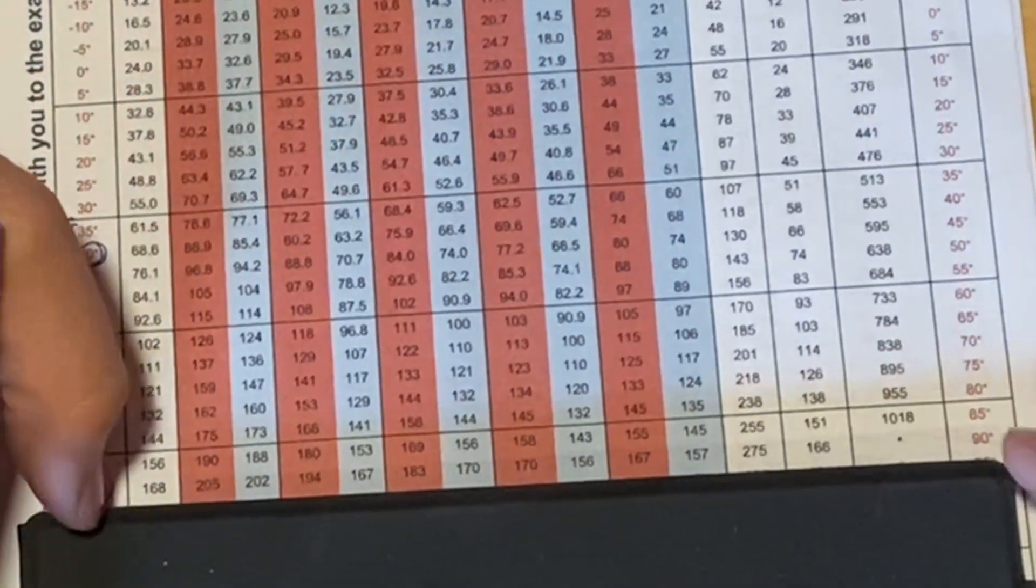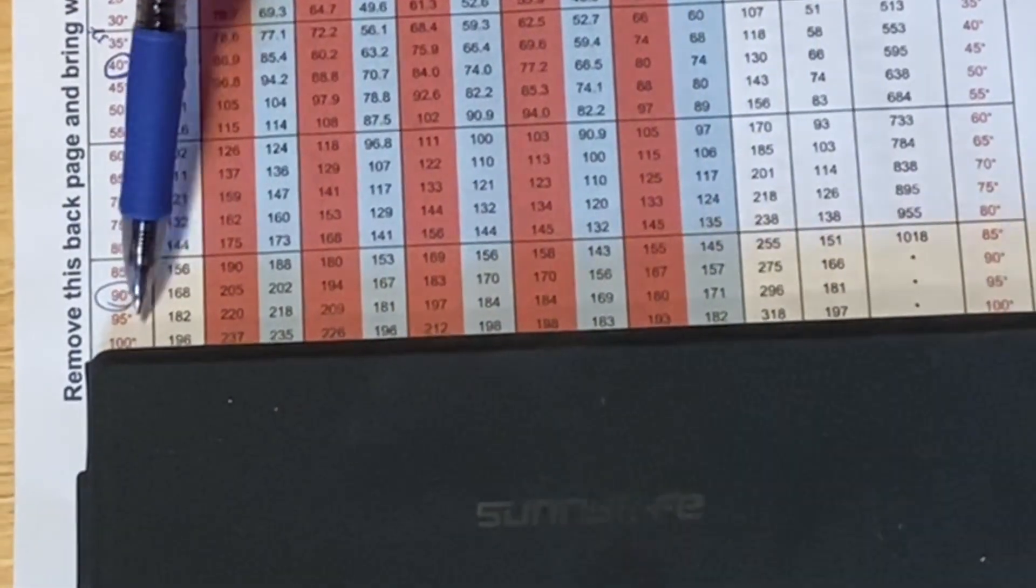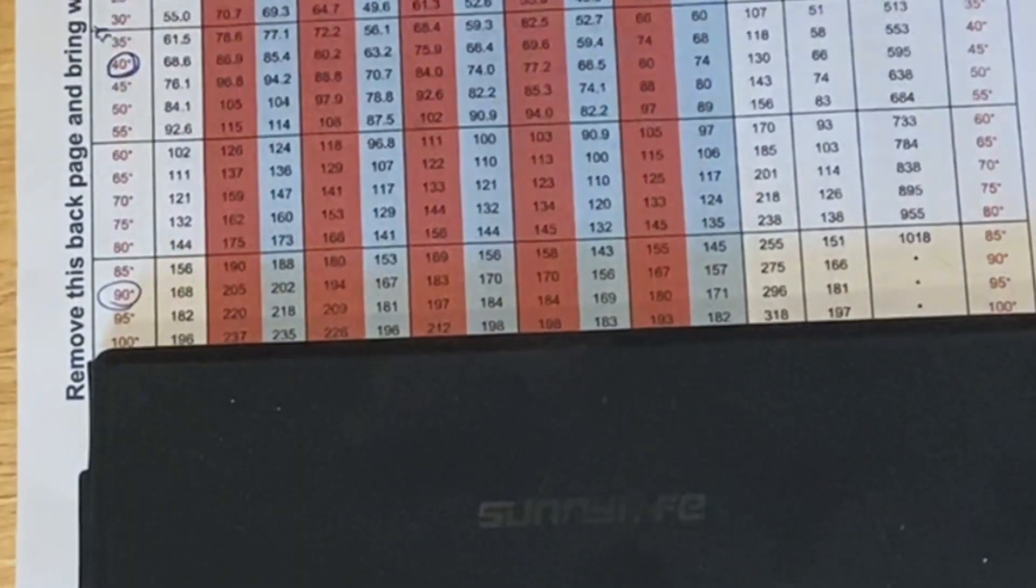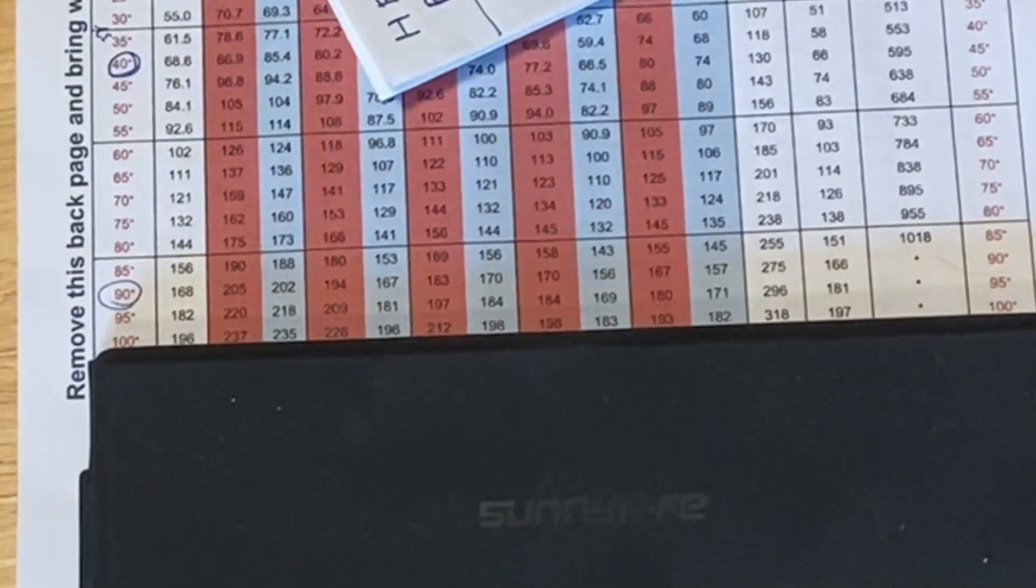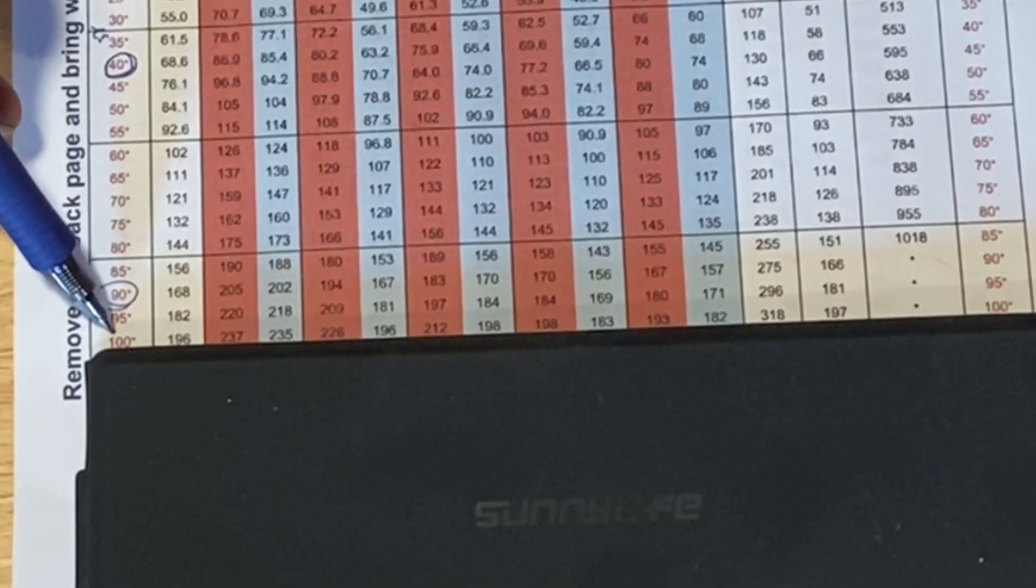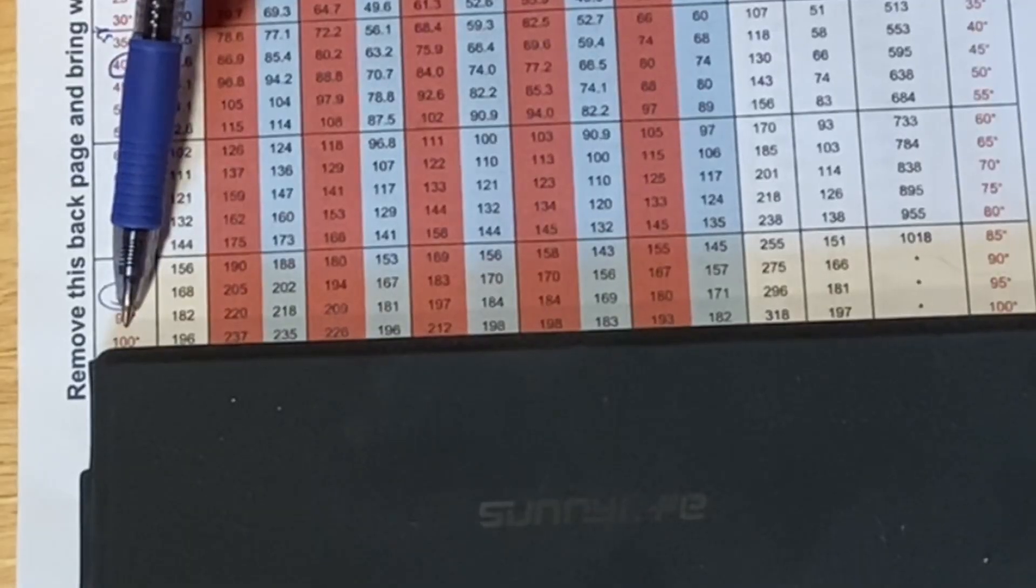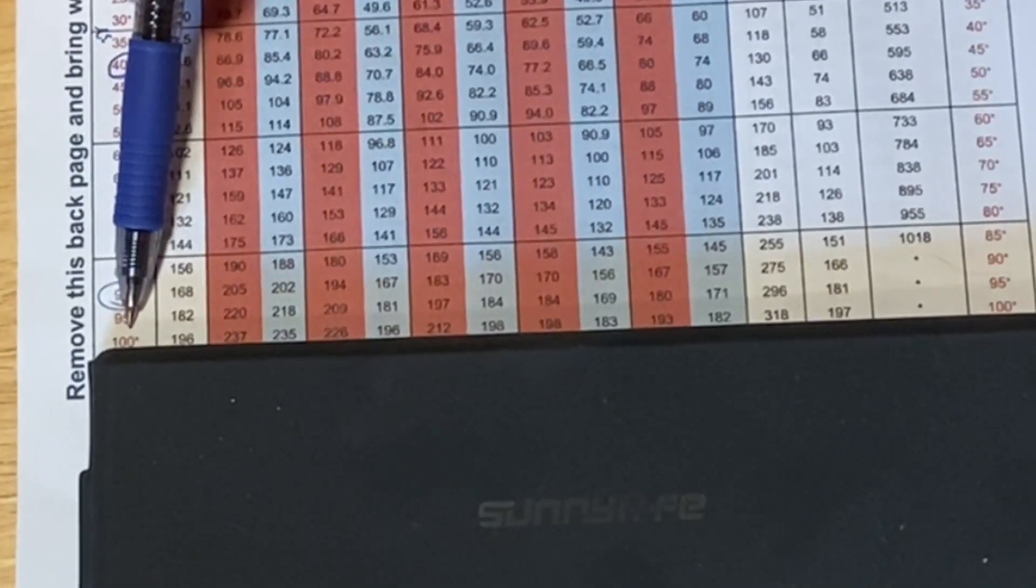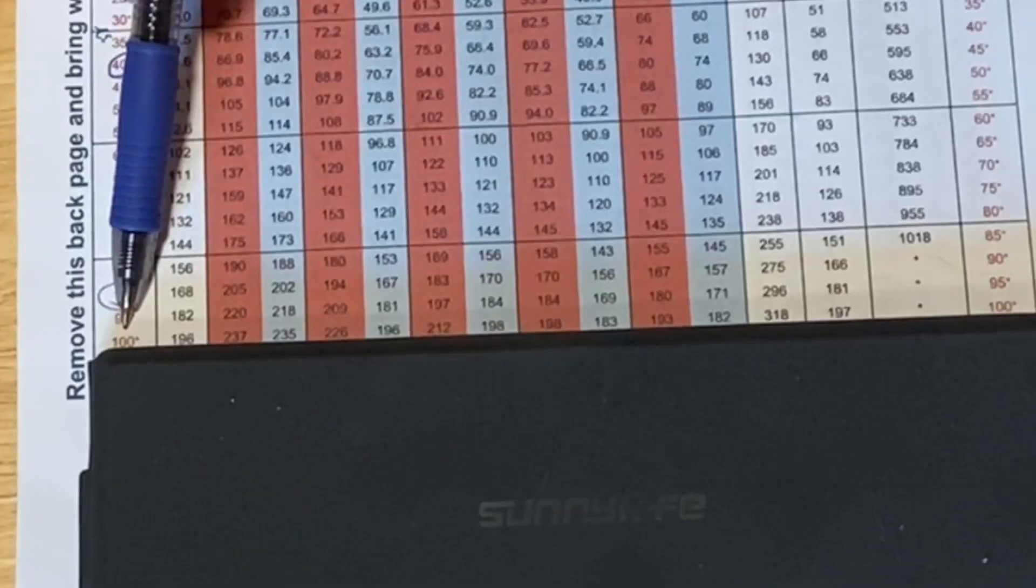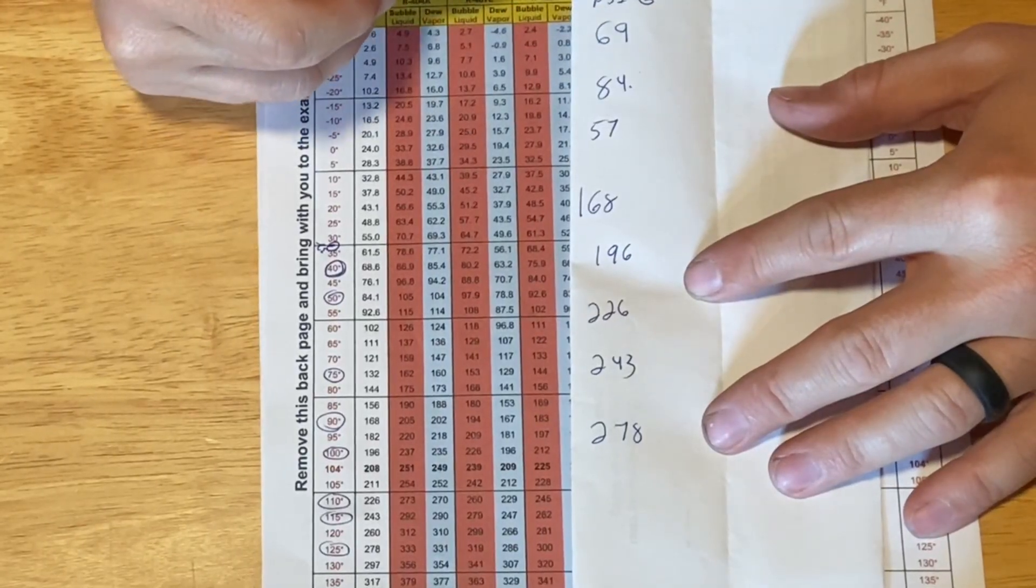The next number we have is 318 psi gauge. That's a 100 degree saturated temperature. So the refrigerant in the condenser would be 100 degrees. Let's say the air temperature was 80 degrees. The saturated temperature being 100 degrees. The air temperature is say 85. The refrigerant is warmer than the air. Heat would leave the refrigerant go to the cooler air. So let's run through another set of numbers.